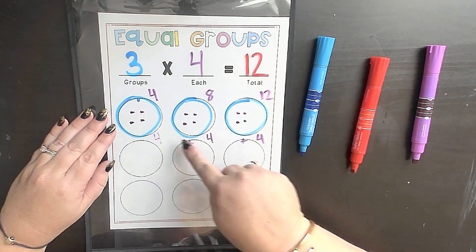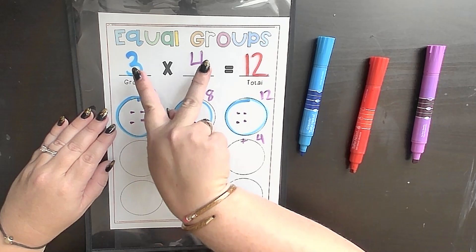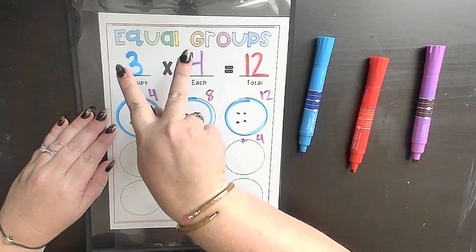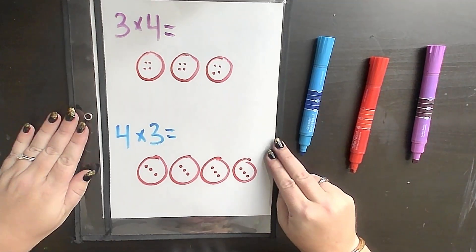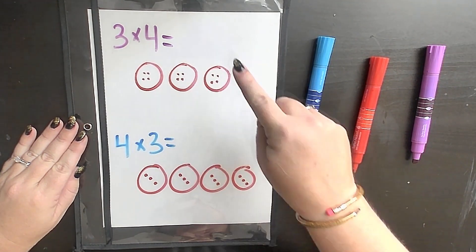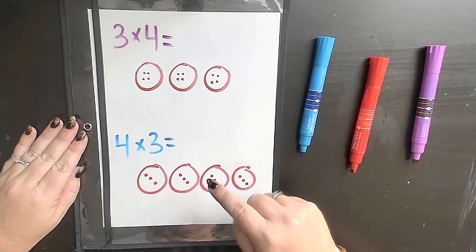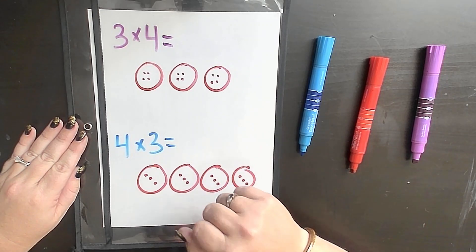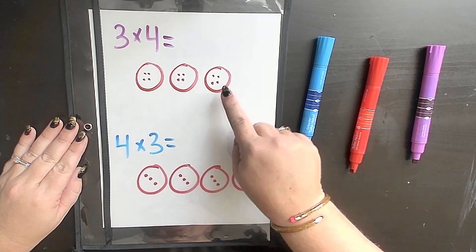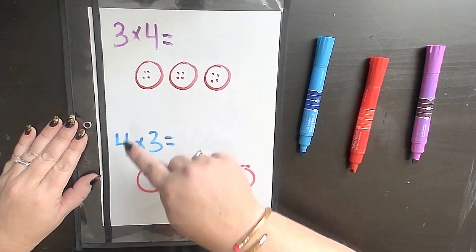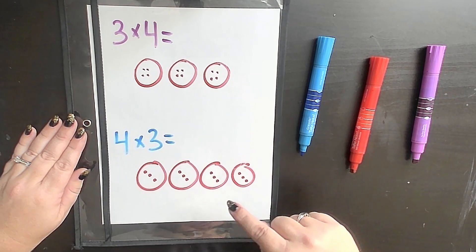Now for learning purposes, I do want to explain that we can also switch our 3 times 4, meaning we could have had 4 loops with 3 groups in each like I've modeled back here. Both strategies will get you the same product, but notice how they're modeling very differently. If I was using a real world situation here, this would be 3 students with 4 candies each versus 4 students with 3 candies each.